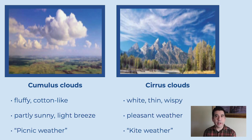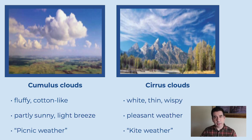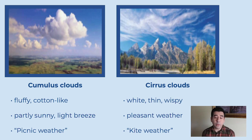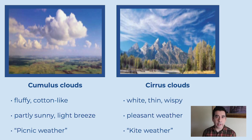Another type of clouds are the cirrus clouds. Those are those white, thin, wispy clouds — it looks like you've got a cotton ball and stretched it out. There's going to be pleasant weather, kind of windy with cirrus clouds. I tell my class that this is known as kite weather, because since it's going to be a little bit windy, it'd be a good day to fly a kite.